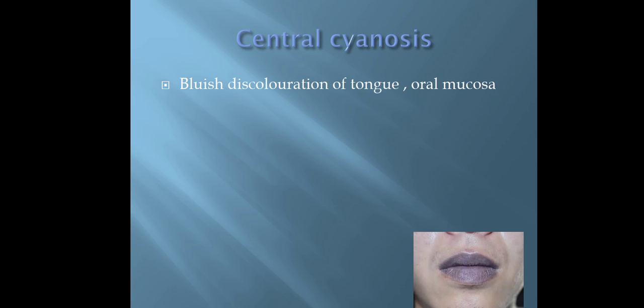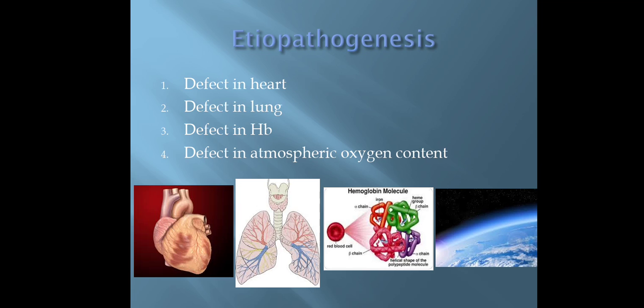Central cyanosis is the bluish discoloration of tongue and oral mucosa. The etiopathogenesis of central cyanosis has 4 categories: defect in heart, defect in lung, defect in hemoglobin, and defect in atmospheric oxygen content.